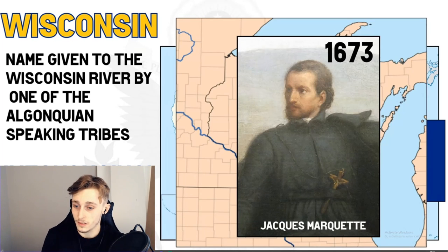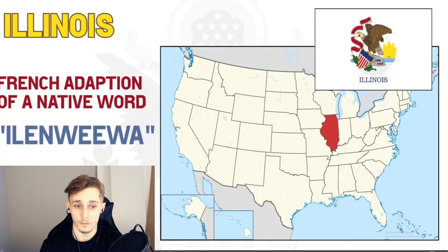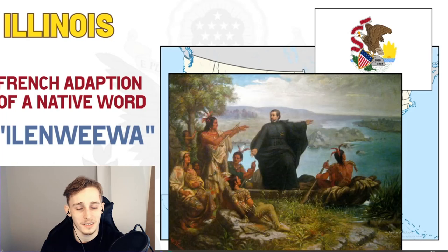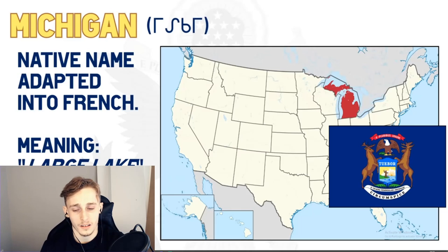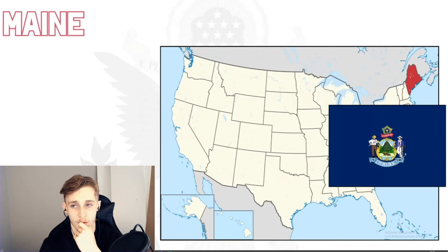Illinois is named for the French adaptation of a native word 'ileniwok,' meaning 'speak normally.' This adaptation was made by early French Catholic missionaries and explorers who referred to the local natives as such. Michigan has a similar story — a native name adapted and rephrased into French — however this one didn't refer to the local population; it was simply a term used to define 'large water' or 'large lake,' from 'mishi-gami' in the Ojibwe language.